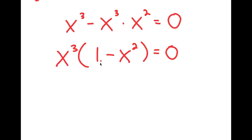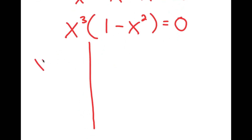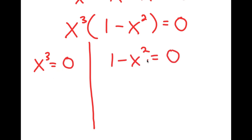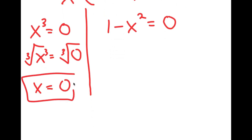This gives me two equations: x to the power of 3 is equal to 0, and 1 minus x squared is equal to 0. For x to the power of 3 equals 0, I'm going to take the cube root on both sides. The cube root of x to the power of 3 is x, and the cube root of 0 is 0. So x equals 0 is one solution.